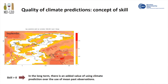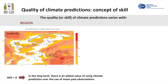I would like to explain the concept of prediction skill, because you will find it here and there when you look at climate predictions. In simple terms, we could say that skill is the quality of the prediction. If the skill is positive — shown as colored regions in the map — then there is an added value in using the prediction over the use of past observations. The skill changes from region to region, as you can see in this map, in which white represents areas without skill.